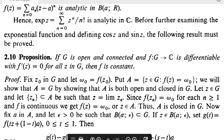Hello students. In today's session, we are going to see that if a complex function has its derivative equal to 0, then it will tend to be a constant function. So let's see the exact statement of this concept, which is Proposition 2.10. This states that if g is an open connected set and we have a differentiable function f from g to the complex numbers such that its derivative is 0 for every z in g, then the function is constant.